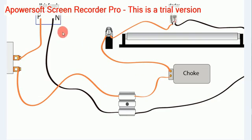Neutral will go directly to the tube light. This is a simple one for tube light connections. If you have any doubt, please comment here. Thank you for watching.